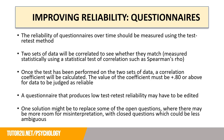If the method used in the stem is a questionnaire, how could we improve the reliability? The reliability of questionnaires over time should be measured using the test-retest method. Two sets of data will be correlated to see whether they match, measured statistically using a statistical test of correlation such as Spearman's rho. Once the test has been performed, a correlation coefficient will be calculated — the value must be plus 0.80 or above for data to be judged as reliable. A questionnaire that produces low test-retest reliability may need to be edited; one solution might be to replace open questions, where there is more room for misinterpretation, with closed questions, which could be less ambiguous.